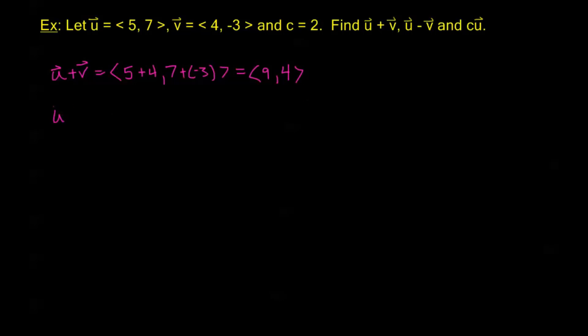Now u minus v, by our formula, I'm going to take the horizontal component of u and then subtract from that, the horizontal component of v, and then I'm going to take the vertical component of u and subtract from that, the vertical component of v. So this difference, u minus v, is going to be the vector <1, 10>.